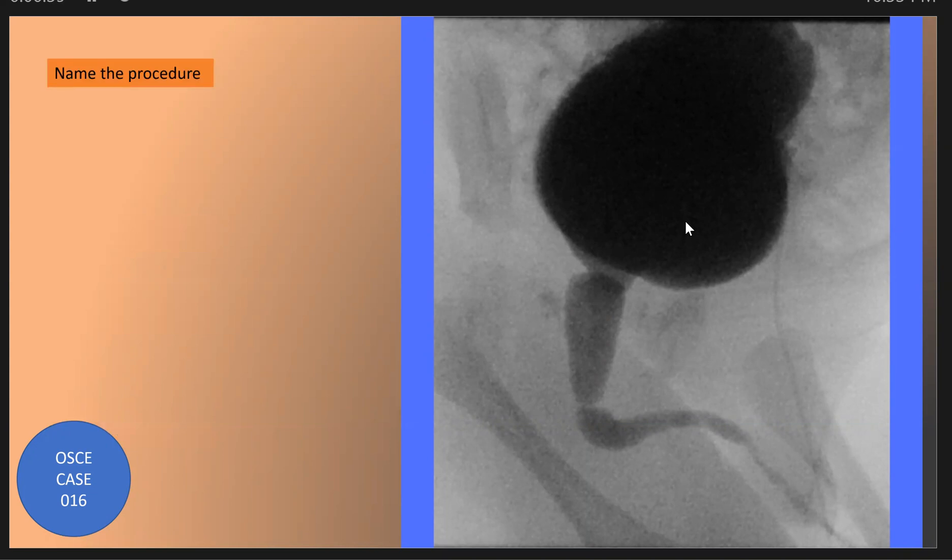The first question: what is the procedure name? The procedure name is voiding cystourethrogram.